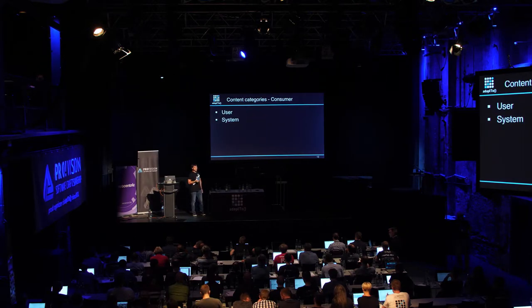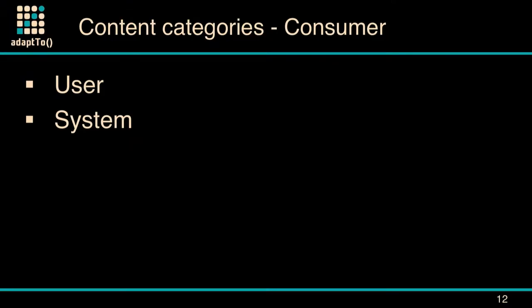For the consumer, we only consider two roles: user and system. The user is just as before — a client, browser, or API consumer. The system is the AEM system itself. A good example of a system consumer would be workflows or job definitions, which are basically consumed within AEM.